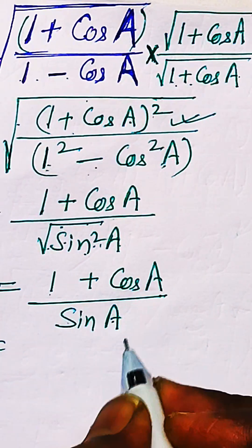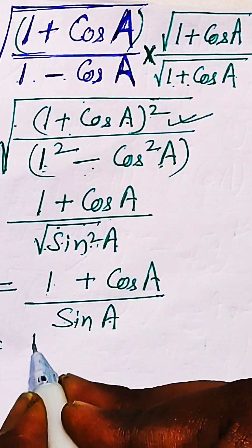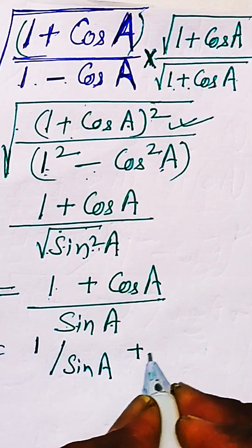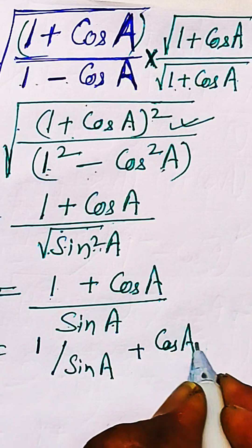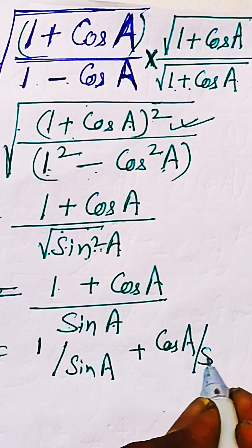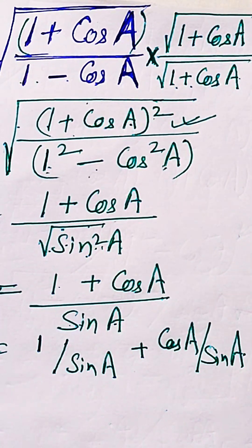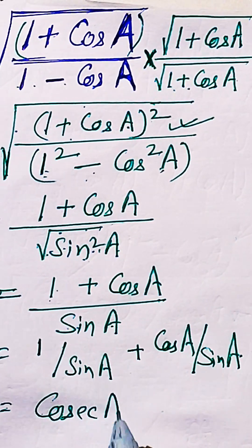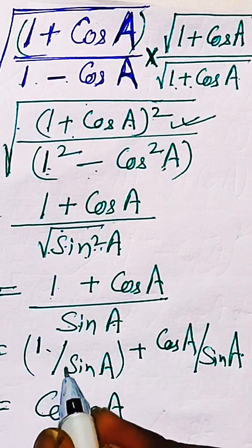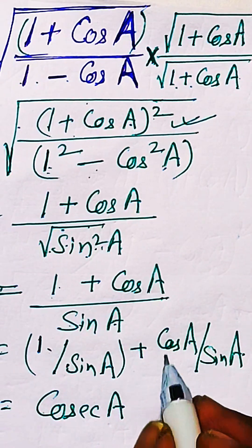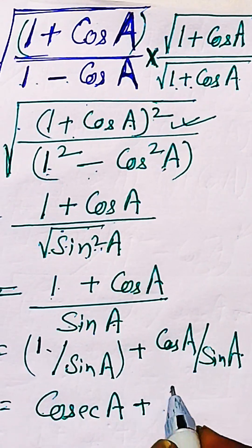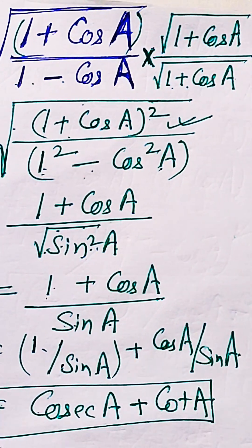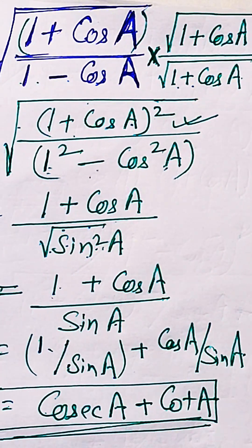Divide 1 and cos A individually by sin A. This gives 1/sin A + cos A/sin A. This equals cosec A + cot A, because 1/sin A is cosec A and cos A/sin A is cot A. So the answer is cosec A + cot A.